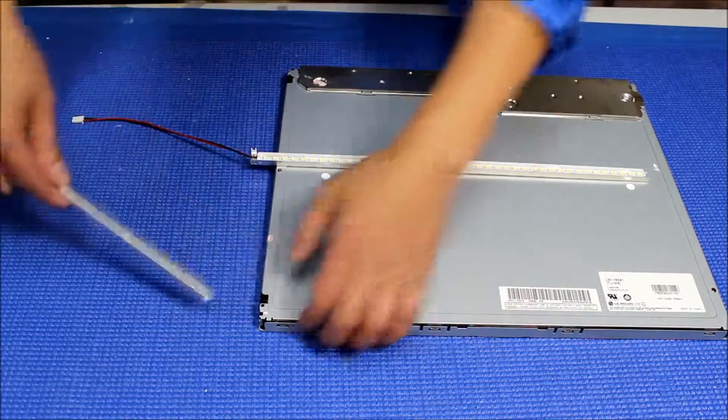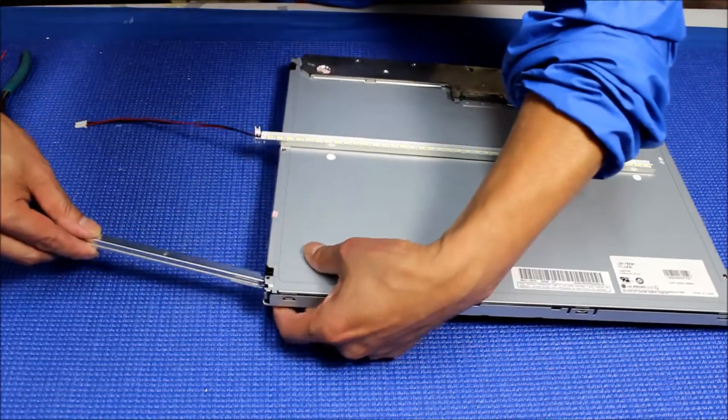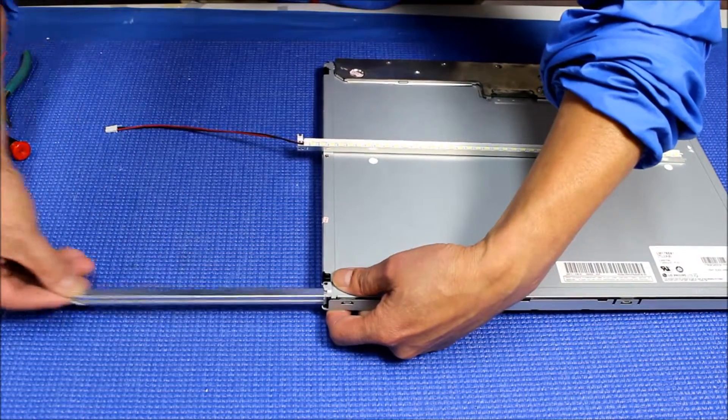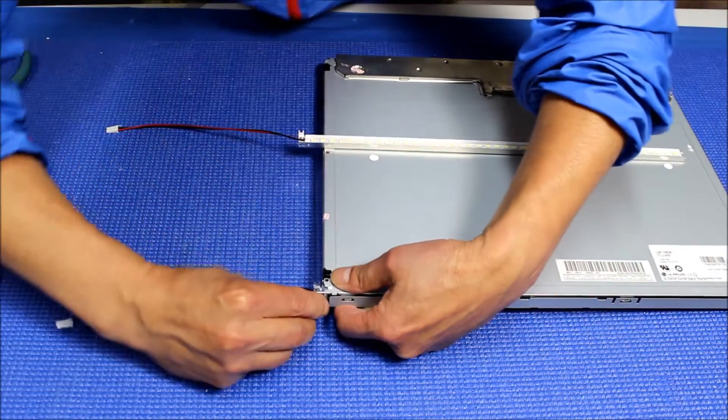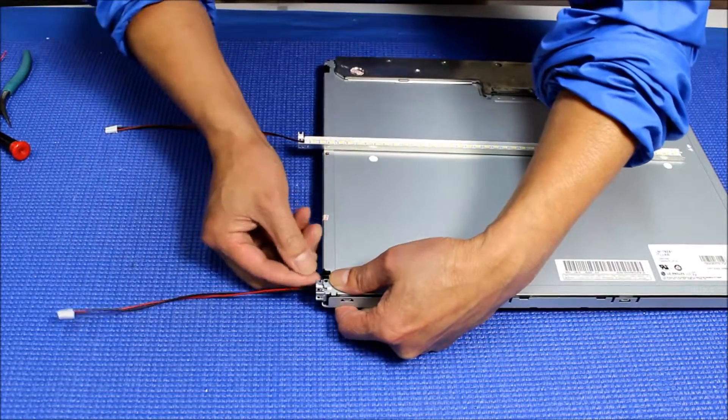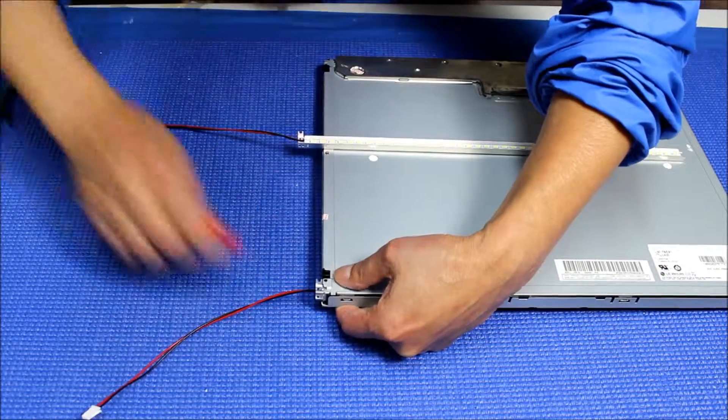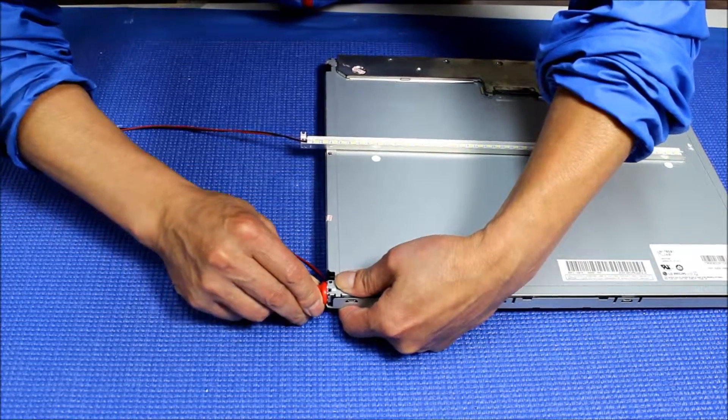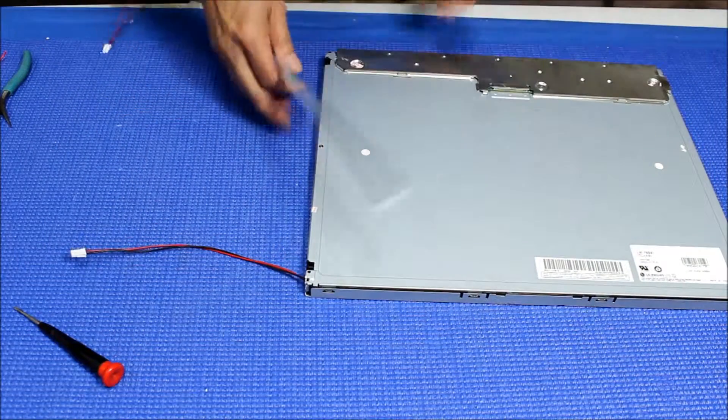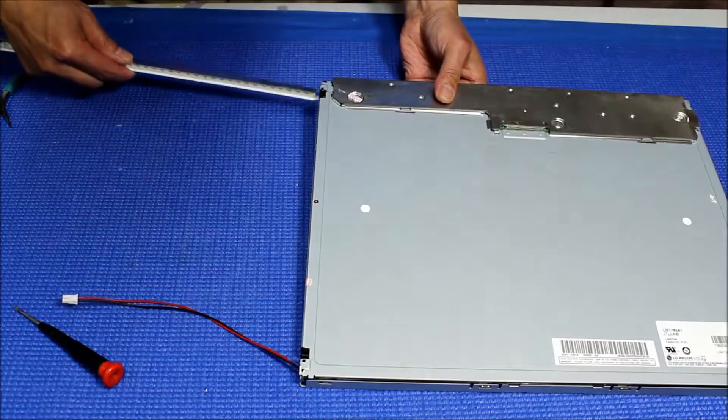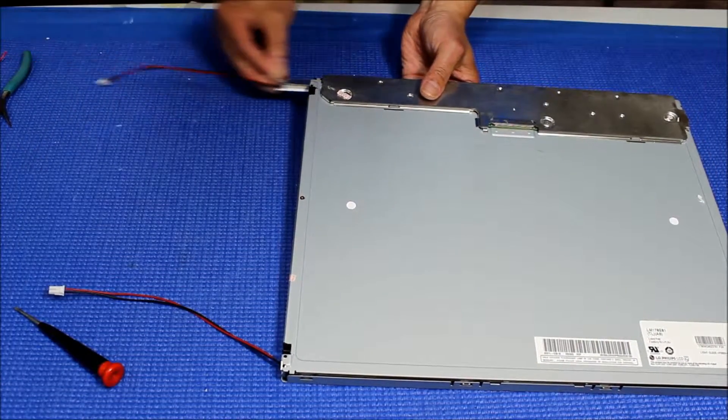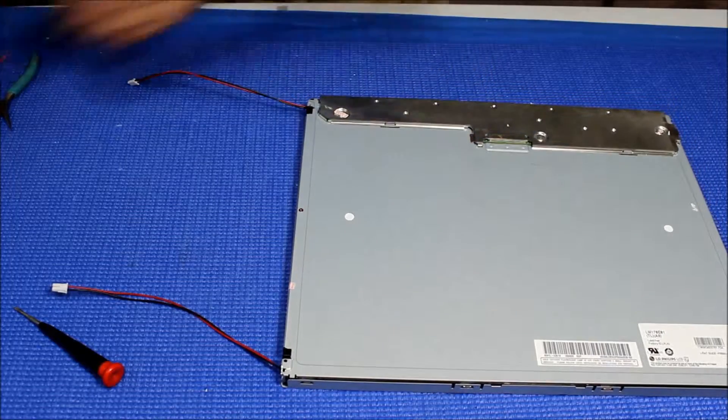You just slide it back, make sure the right direction. Now slide one at a time, just slowly. Okay. Like that one inside, the other one here. And then just put the two screws back.